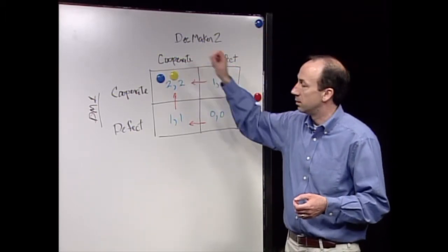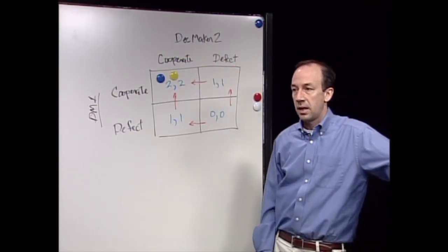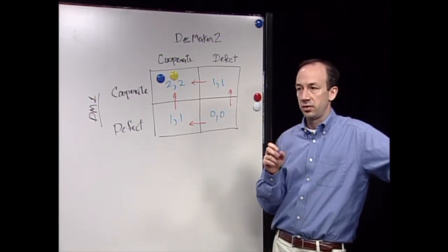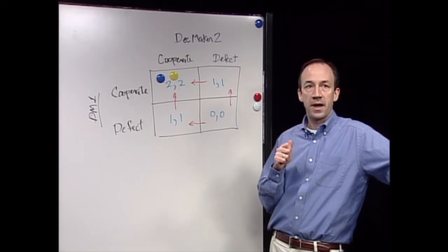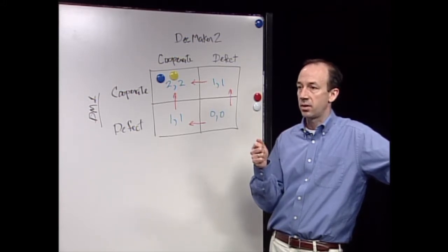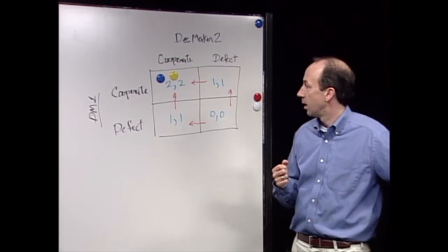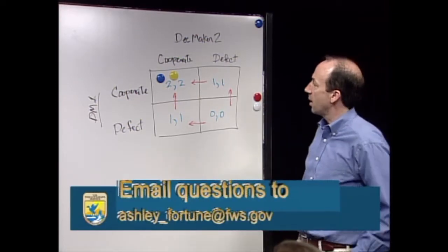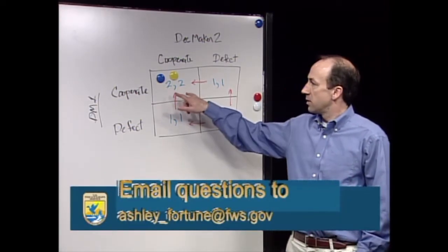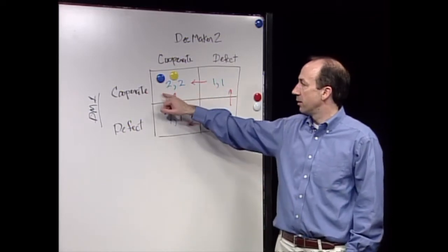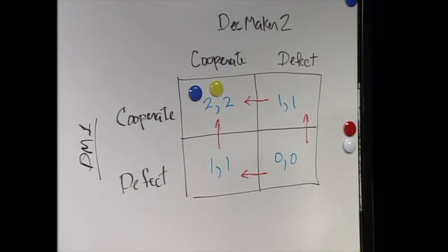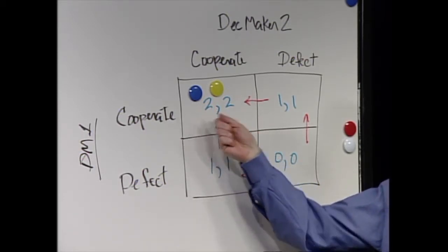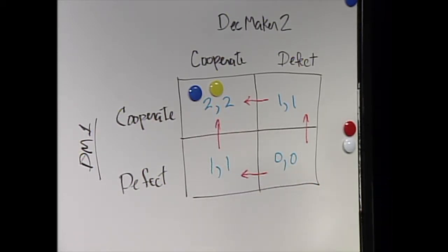And what that means is that there is no other solution in which one decision-maker can improve their outcome without the outcome of the other decision-maker declining. So the Pareto optimal means there is no solution on this board that's better for decision-maker one that isn't worse for decision-maker two. In fact, there's actually no solution on this board that's better for decision-maker one at all. So it's both Pareto optimum and a Nash equilibrium.